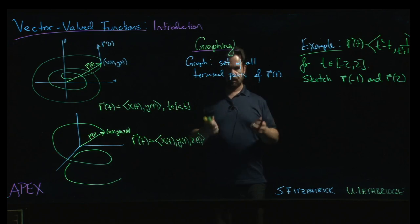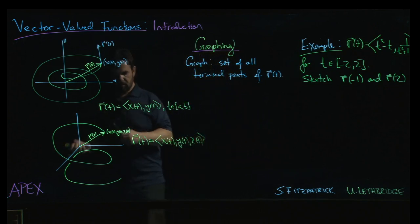So the idea is we plot the points, we plug in different values of t, we get the vectors, we draw the vectors, we look at the endpoints, that gives us the idea of the graph.